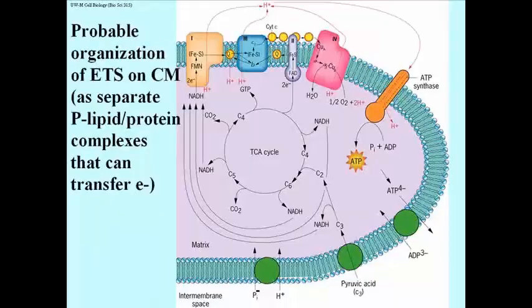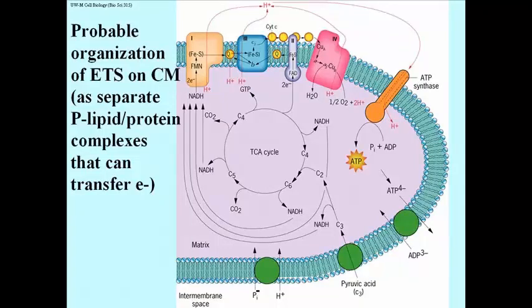Here's a cartoon of the cristae membrane showing the respiratory protein complexes as well as several other membrane proteins whose function is known. At the top are the respiratory proteins, or electron transport protein-phospholipid complexes, labeled complexes 1, 2, 3, and 4, along with coenzyme Q. These are shown organized so that you can watch the electrons flow, but in reality they are not organized and held together in any fixed arrangement on the membrane — they have to diffuse and bump into one another in order to transfer electrons from one complex to another.